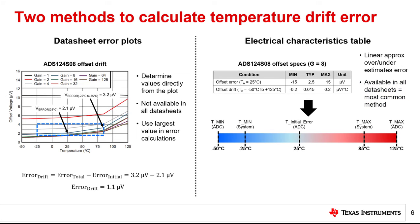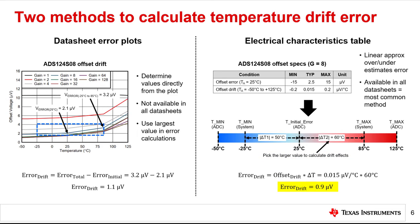To calculate temperature errors using the second method, we first need to identify the error calculation temperature range using the temperature gradient on the right. This plot includes the specified temperature range of the ADS124S08, the system measurement range, and the initial error temperature. To identify the error calculation temperature range, subtract T initial error from Tmin system and Tmax system, resulting in delta T1 and delta T2 respectively. Taking the absolute value and choosing the larger of the two yields the error calculation temperature range. Applying these values yields a calculated drift error of 0.9 microvolts.